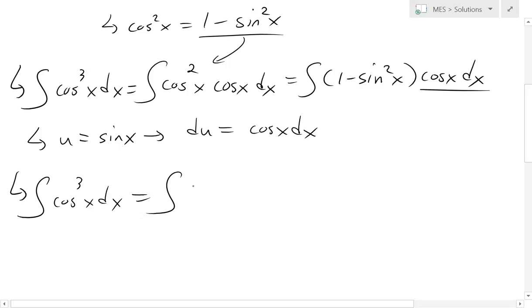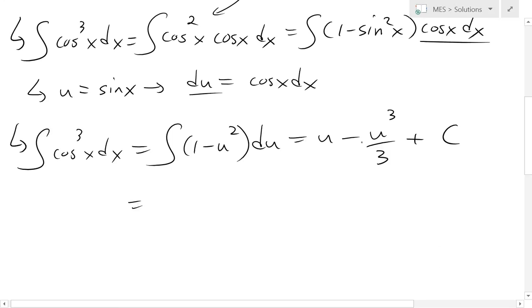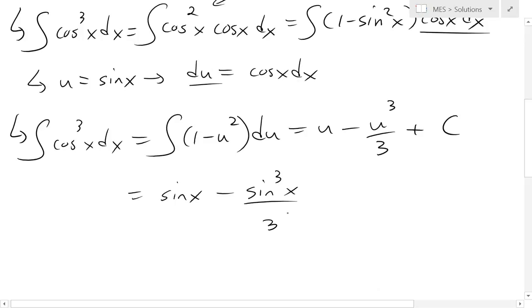So now we have the integral of 1 minus u squared du. We can solve this integral pretty easily. The integral of 1 is just u, integral of u squared is u cubed divided by 3, and we always have to add a constant C. Now we can plug back our u inside, so we have sine x minus sine cubed of x divided by 3 plus C.